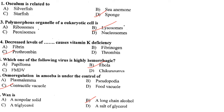Decreased level of prothrombin causes vitamin K deficiency. Which one of the following viruses is highly hemorrhagic? Ebola is highly hemorrhagic. Answer is option B.